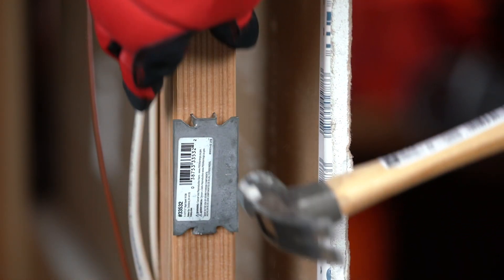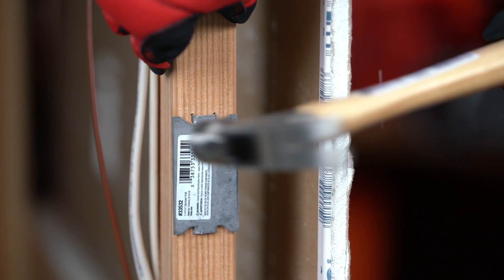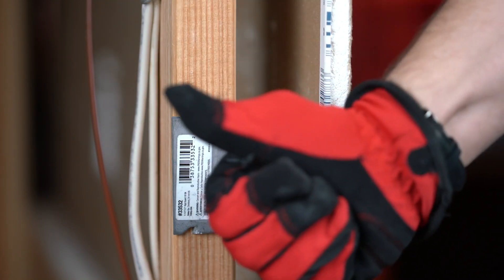If you have no choice but to drill near the edge, then you have to install nail plates on these studs to protect the wires from being penetrated by a drywall screw. There are a couple different kinds of nail plates, but they all just get pounded on by a hammer.